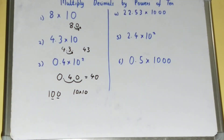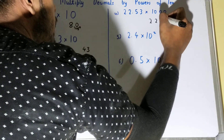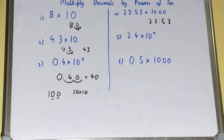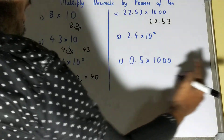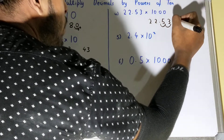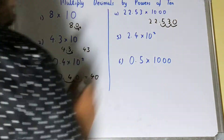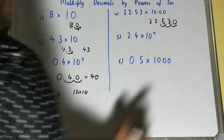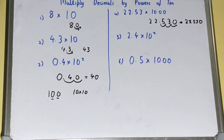Let's see the fourth one, which is a bit tougher: 2.53 × 1000. We write the number 2.53 and see how many zeros are in 1000 — one, two, three — three zeros. So we move three decimal places to the right. For the first place we have the digit 5, for the second we have 3, but for the third we don't have a digit, so we put zero. Your 2.53 becomes 2530.